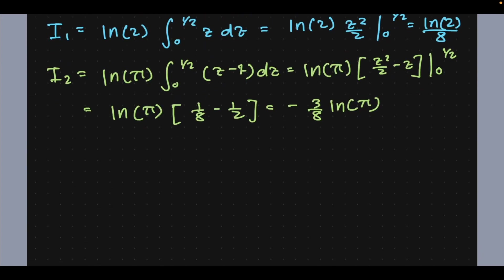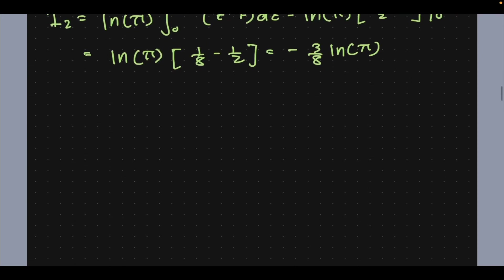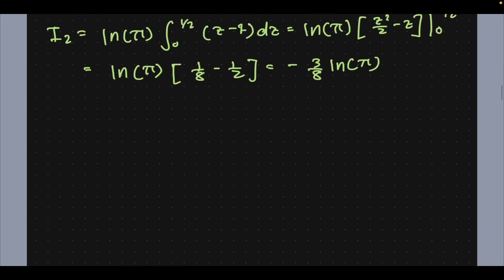So I3: integral from 0 to 1/2 of natural log of sine(πz/2) dz. Now what I would like to do here is use a substitution u equals πz/2 such that du is π/2 dz.